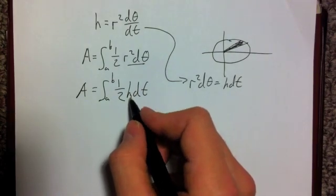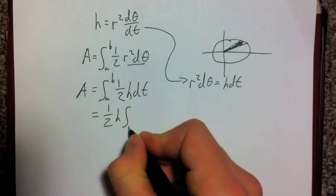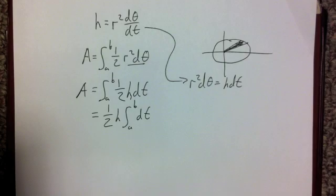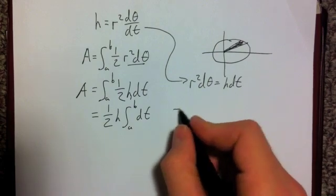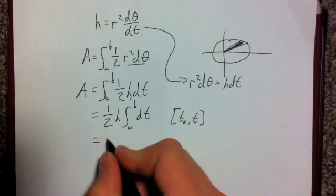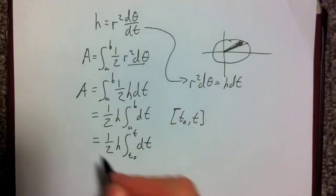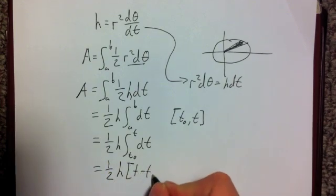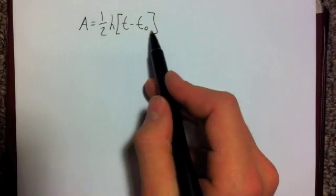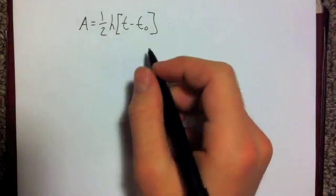As shown earlier, h is a constant, as is ½, so they can be brought outside of the integral, giving ½h times the integral from t₀ to t of dt. Evaluating this integral, we're left with A equals ½h(t − t₀). For equivalent time intervals, the area will be constant since h and ½ are constant. Therefore, Kepler's second law is proven.